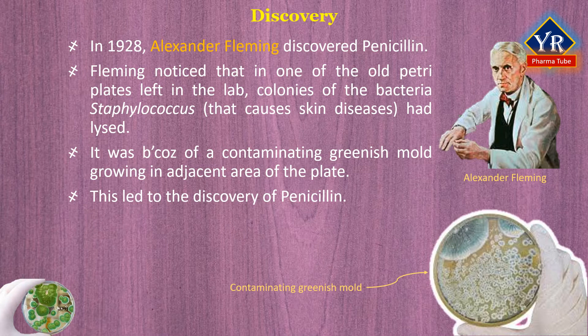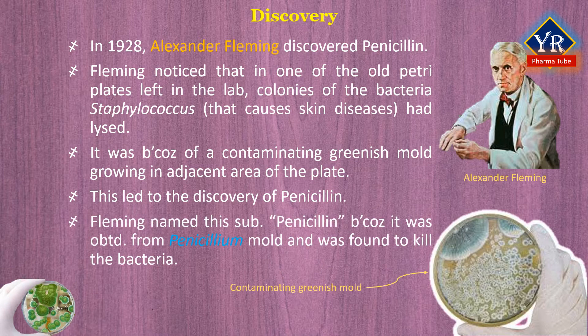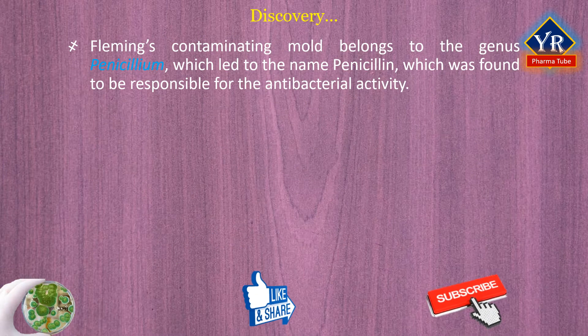By extracting the substance from the cultures of the mold, he was able to demonstrate its antibacterial activity not only on the plates, but also in infected mice. Fleming named this substance penicillin because it was obtained from the Penicillium mold and was found to kill the bacteria. Fleming's contaminating mold was identified as belonging to the genus Penicillium, which led to the name penicillin for the substance responsible for the antibacterial activity observed on the agar plate.